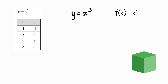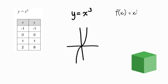Another type of function is a cubic function. For every input there is a unique output. The graph of a cubic function looks like this — it is symmetric about the origin and goes through the origin (0, 0). It is a function because for every input there is a unique output.